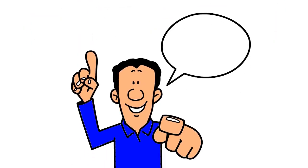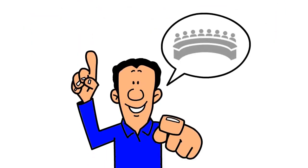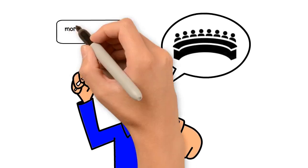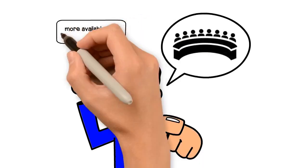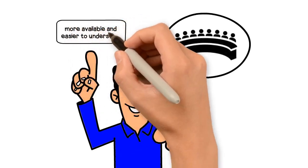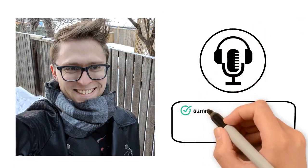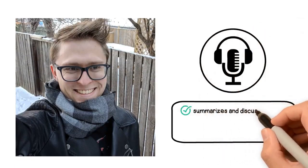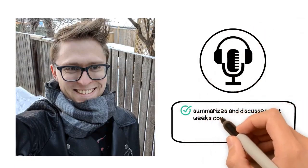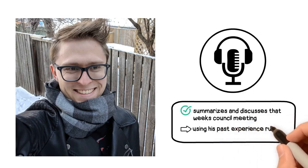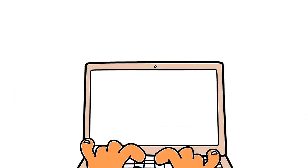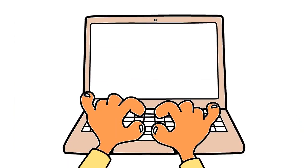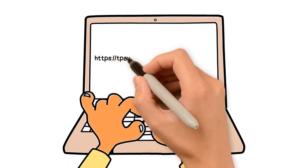Other Edmontonians have made efforts to make council meetings more available and easier to understand. An Edmontonian named Troy Pavlik has a weekly podcast where he summarizes and discusses that week's council meeting using his past experience running for council. Here's a link to that podcast.